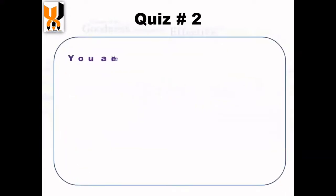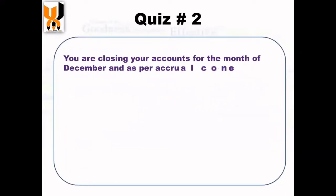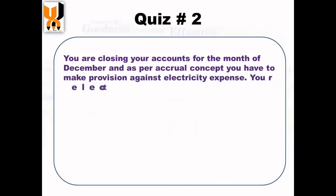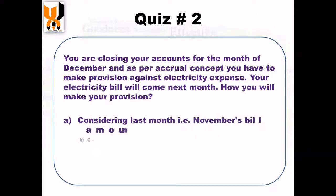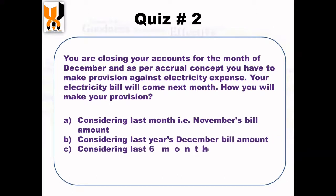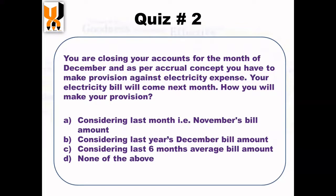Let's see another quiz to understand the concept. For example, you are closing your accounts for the month of December, and as per the accrual concept you have to make a provision against the electricity expense. Your electricity bill will come on the 10th day of next month, but you are closing your accounts now. How will you make your provision for December? Will you consider November's bill, last year's December bill, the average for the last six months, or none of them?